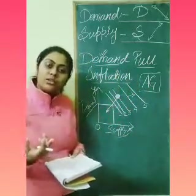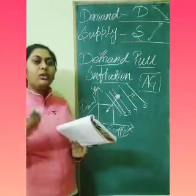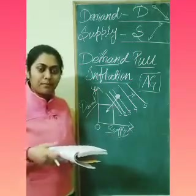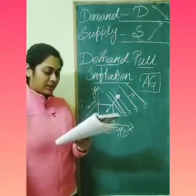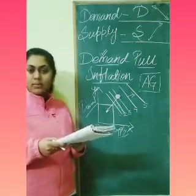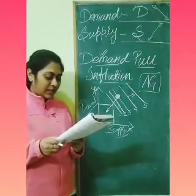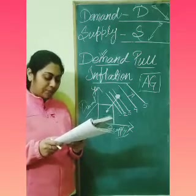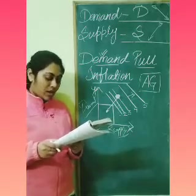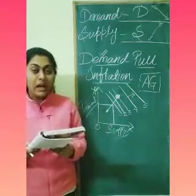The demand is increasing because consumption is increasing. In addition to consumption, an increase in investment expenditure, government expenditure, or increase in money supply are other factors. Through any source, if aggregate demand rises rapidly and exceeds the economy's production capacity, prices will begin to rise more and more rapidly.